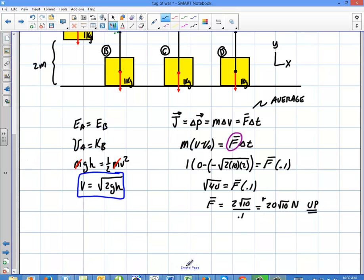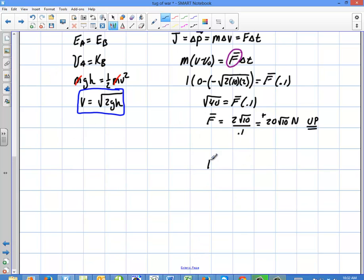Now, that's the average force, so what's the peak force? Well, the peak force is simply going to be twice the average force in this case. So my peak force is going to be 40 root 10 newtons up. So that's my average force, and that's my peak force right there.